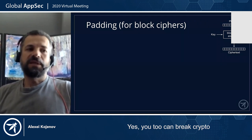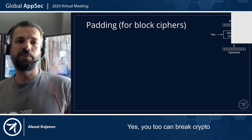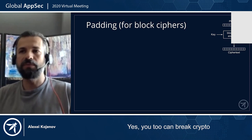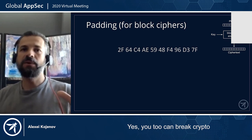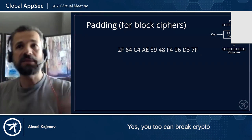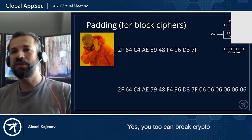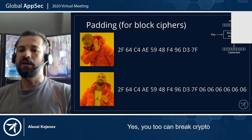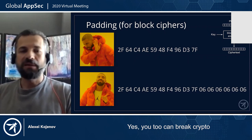The other problem with block ciphers is they only act on blocks, so the length of your data has to be a multiple of the block size — 16, 32, or 48 bytes, and so on. But your message is not always exactly a multiple of the block size. So we use so-called padding. Say we have a message of 10 bytes but we need 16. By convention, we pad the message with six extra bytes, each set to the value 6. When you decrypt and see the last block ends with six bytes of value 6, you throw them away — that was padding. Padding works great for block ciphers.